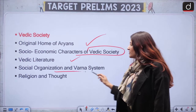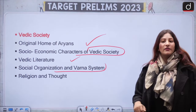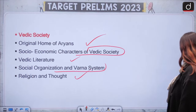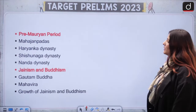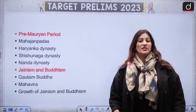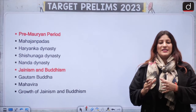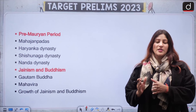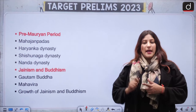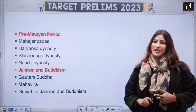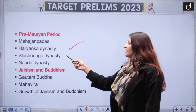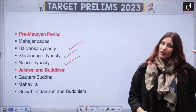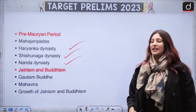Vedic Literature, Social organization, and Varna system are very important in religion and thought — who propounded what thought. Then in the pre-modern period, the number of Janapadas, specifically from a map perspective — Mahajanpadas and their capitals are very important. The Haryanka dynasty, Shishunag, and Nanda dynasty — the important rulers and their administrative structure.